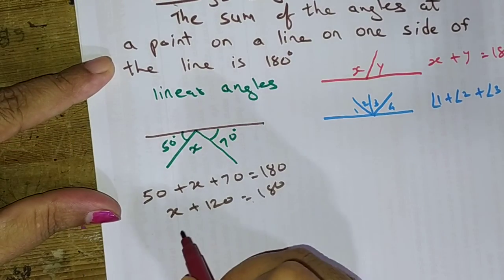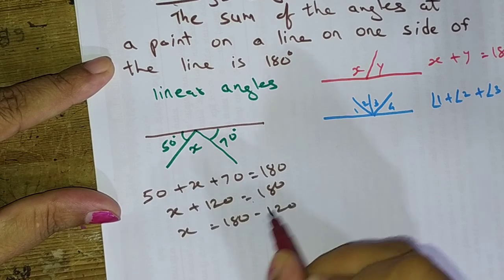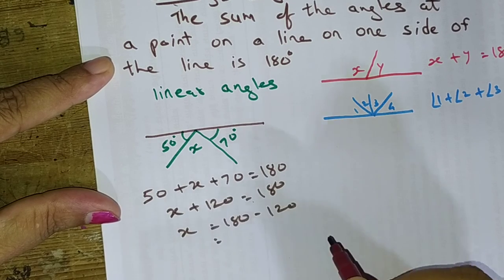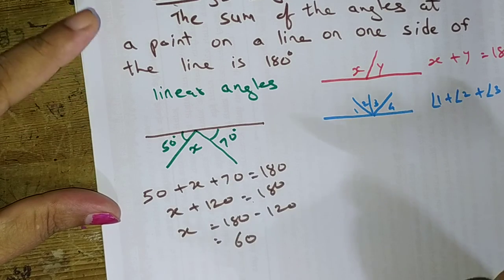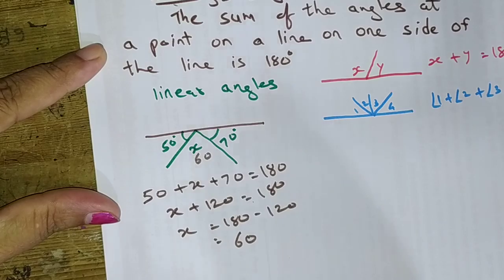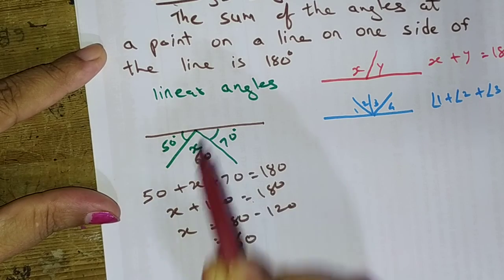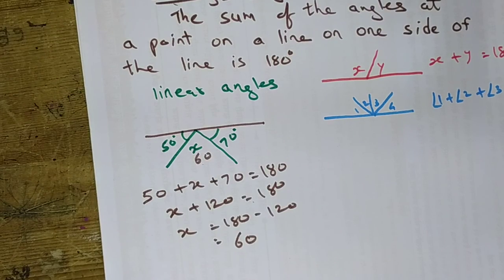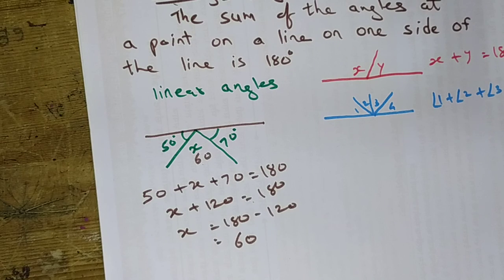Further, we can write x equals 180 minus 120, and the final result is 60. So the value of x is 60 degrees. You can verify: 50 plus 60 plus 70 equals 180. So here we have studied the straight angle, also called the linear angle, and they sum up to 180.